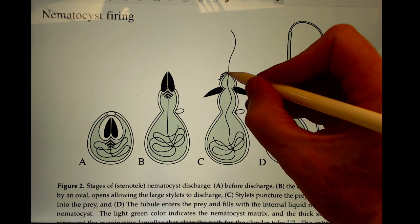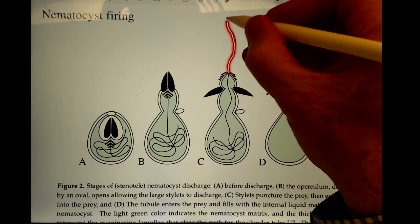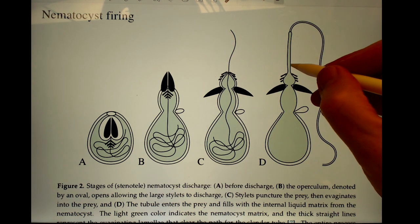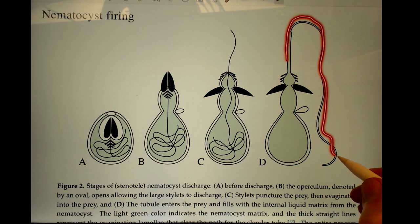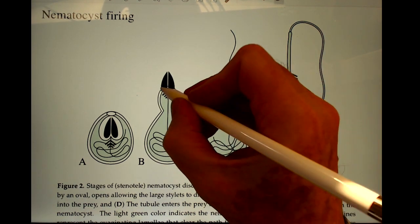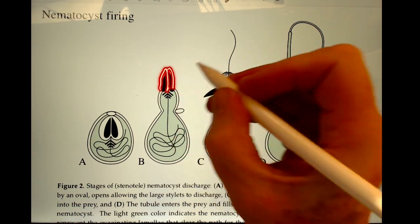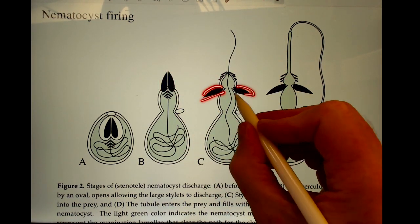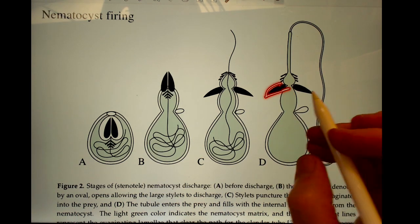And as it goes out, it pushes out a long stalk. I'll show you how that happens. And at the end, you've got this long stalk, often with barbed pieces, that notice they come out pointing upward, and then they move out sideways as the nematocyst continues to sting.